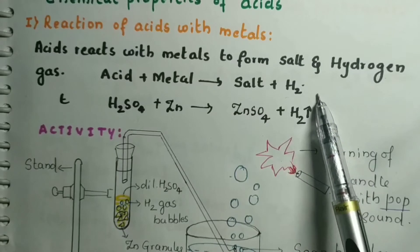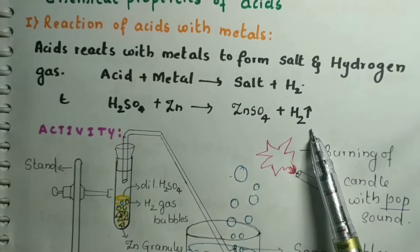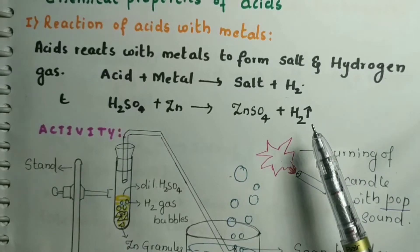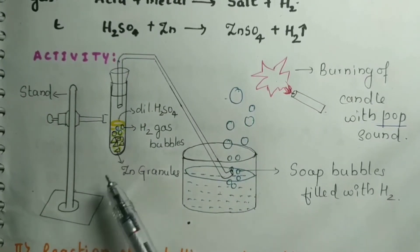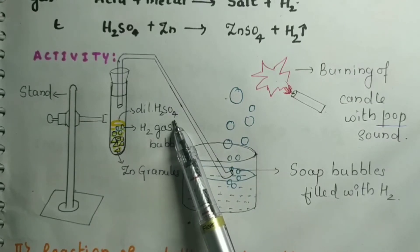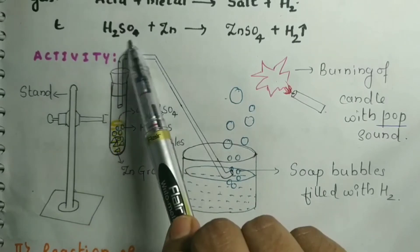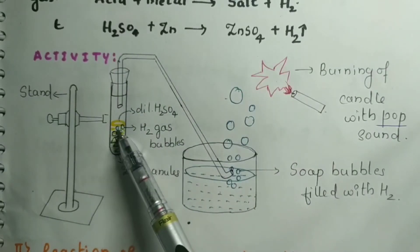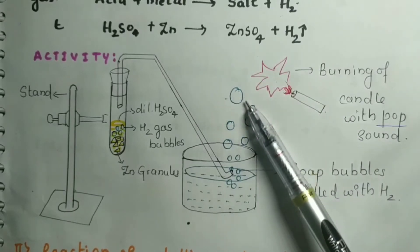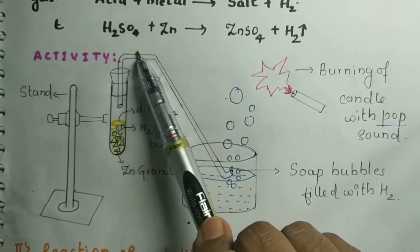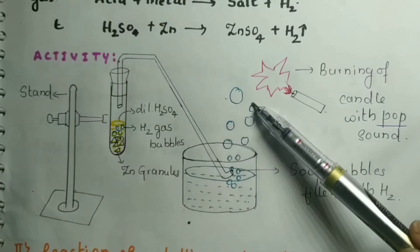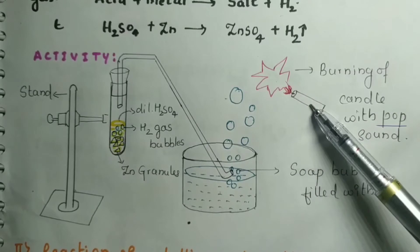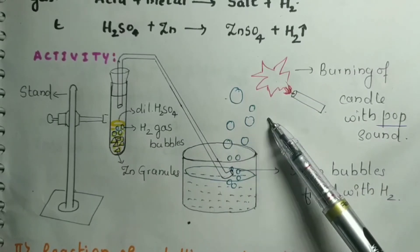To identify the release of hydrogen gas, we do a small activity. We take a test tube with dilute H2SO4 and zinc granules. When they react, zinc sulfate and hydrogen gas are formed. The hydrogen gas always makes a 'pop' sound when burning. The gas passes through a tube and forms hydrogen soap bubbles. When a burning candle is brought near, it makes a pop sound — confirming hydrogen gas is released.